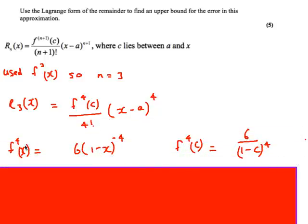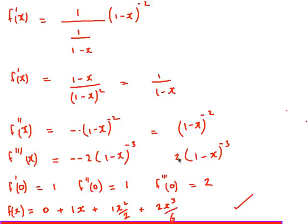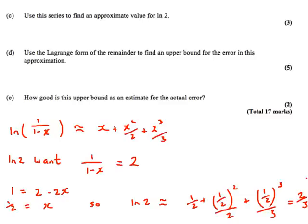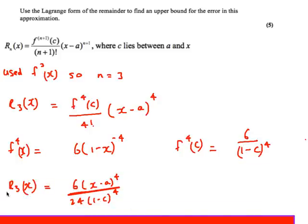The next thing to do is actually work out what the fourth differential is. My third differential was 2 times (1 minus x) to the minus 3. So if I differentiate this function again, I will get 6 times (1 minus x) to the minus 4. Then I replace the x with c, so it's 6 over (1 minus c) to the power 4. So the error approximation is 6 times (x minus a) to the power 4, all over 24 times (1 minus c) to the power 4.